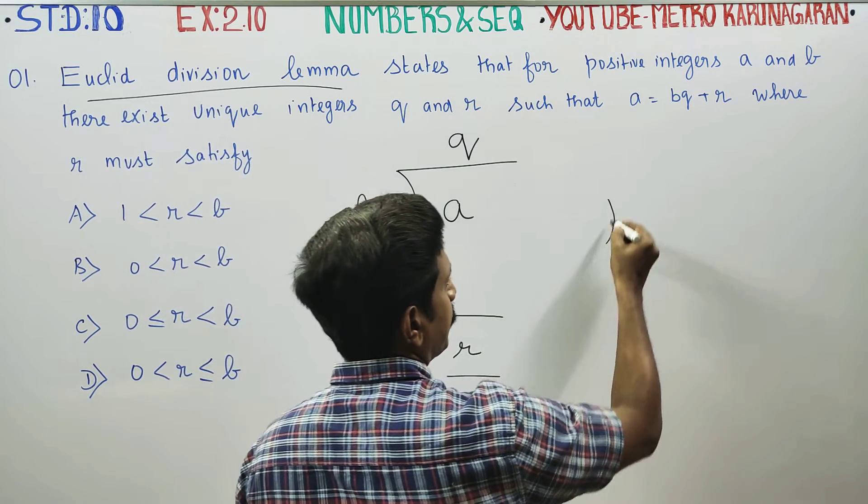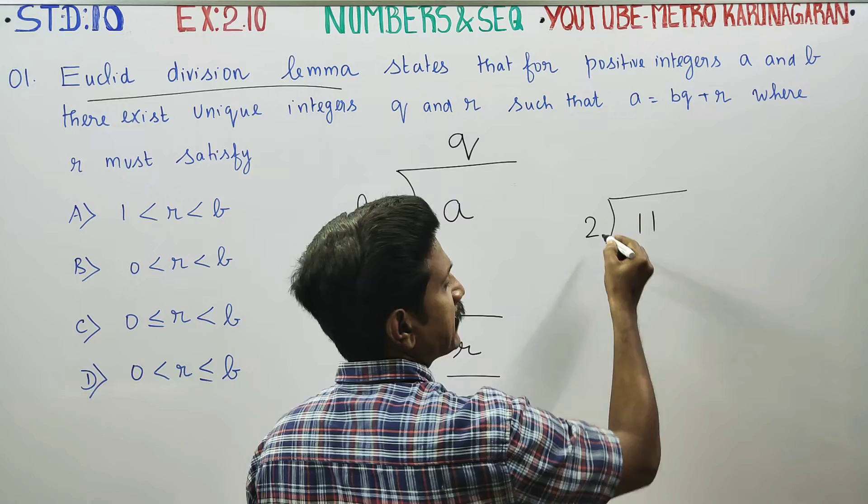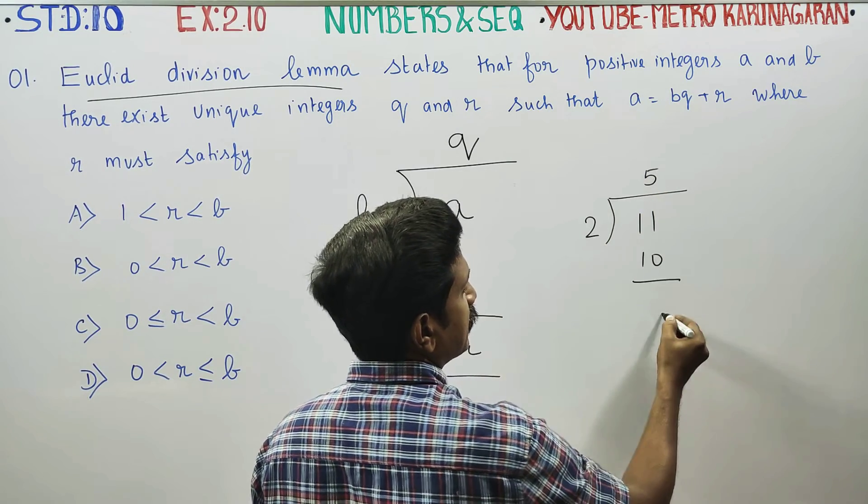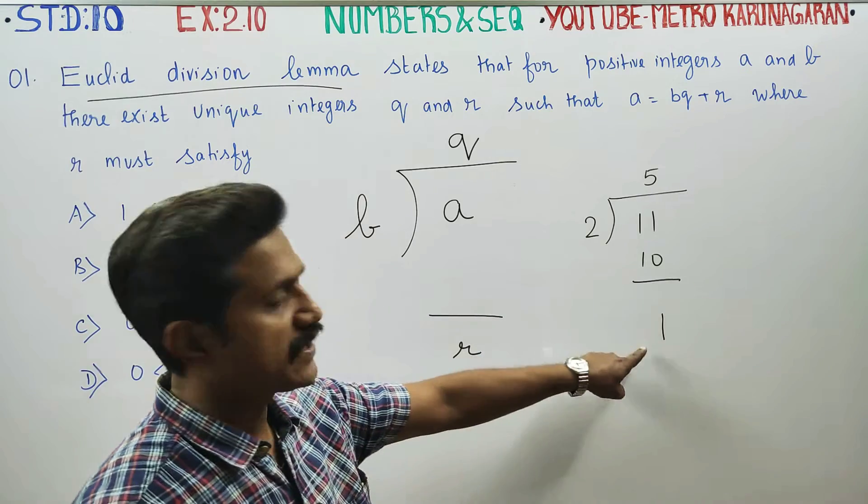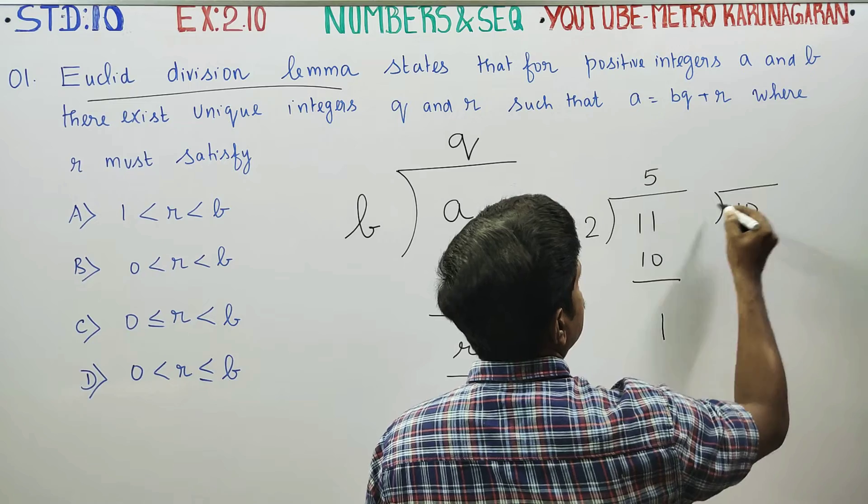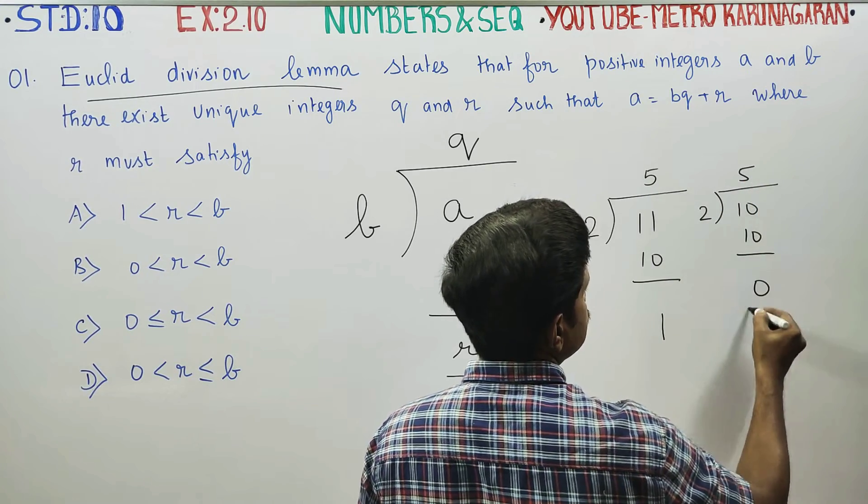For example, if you have 11 divided by 2, 2 goes into 11 five times with remainder 1. The remainder is 1.